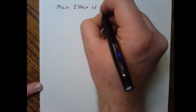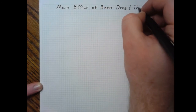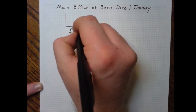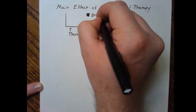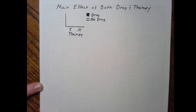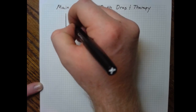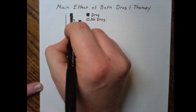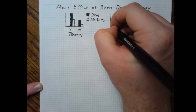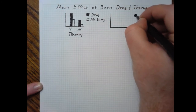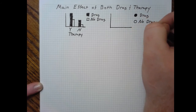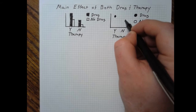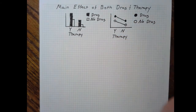It is also possible to have two independent main effects where both the drug and the therapy are doing something, but they're not interacting. On a bar graph, if you're doing the drug and the therapy — both of which improve your condition — you do well. If you only have one of them, you do less well, and if you have neither, you do pretty poorly. On the line graph, you can see both factors having that effect with lines that are parallel but separated.